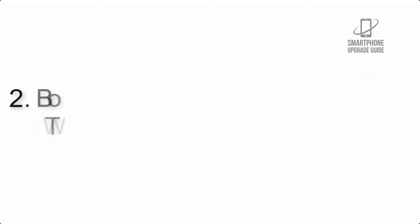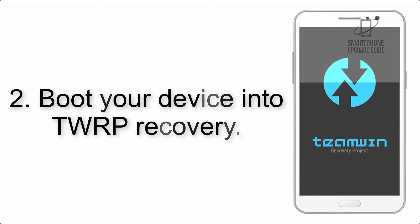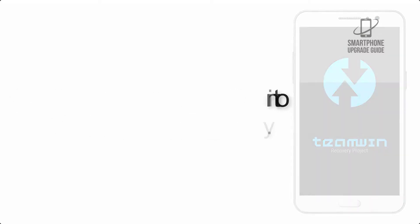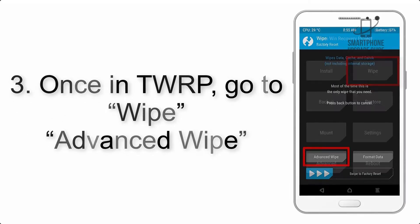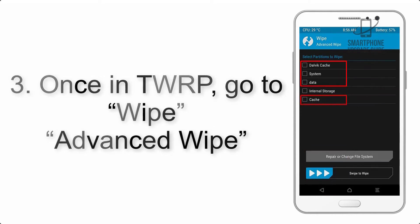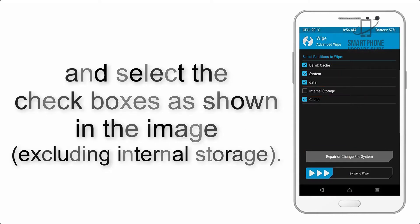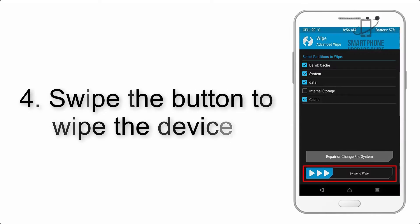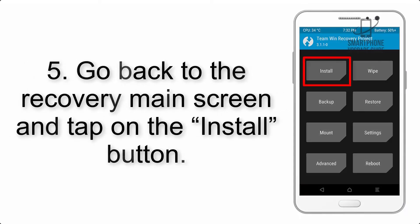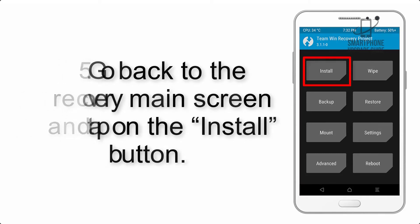Step 2: Boot your device into TWRP recovery. Once in TWRP, click on Wipe, then Advanced Wipe, and select the checkboxes as shown in the image, excluding internal storage. Step 4: Swipe the button to wipe the device. Step 5: Go back to the recovery main screen and tap on the Install button.